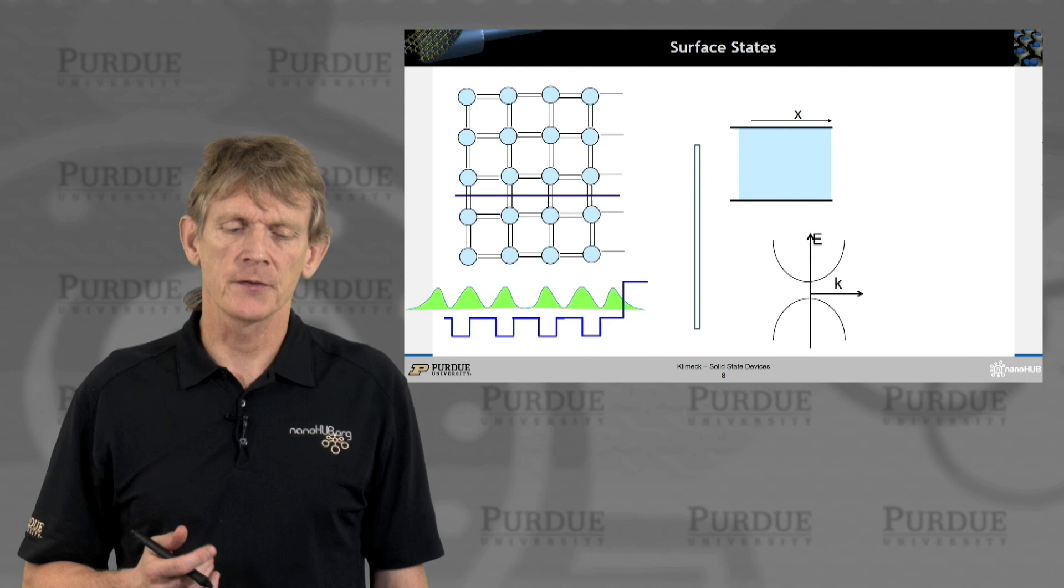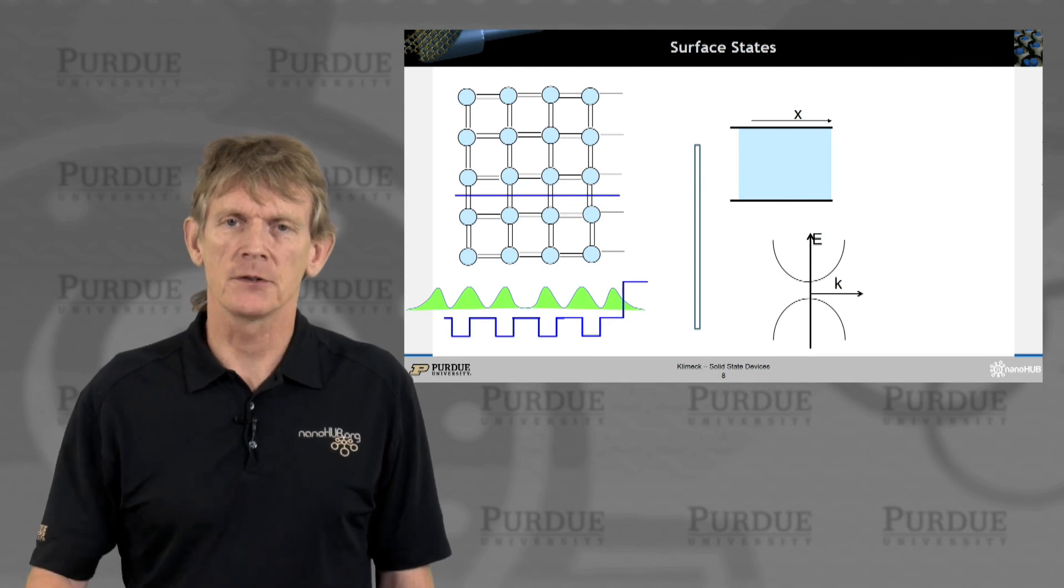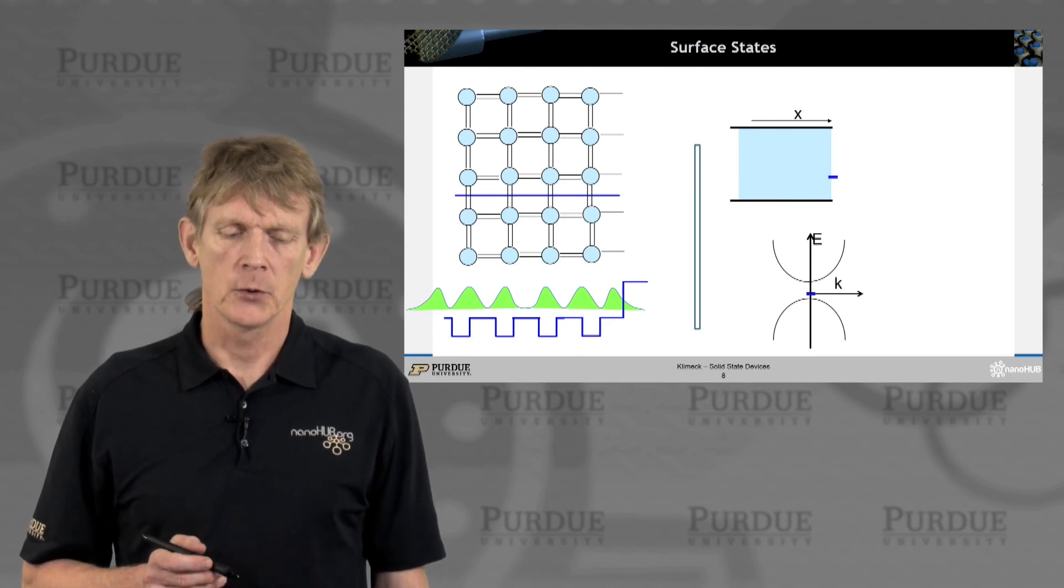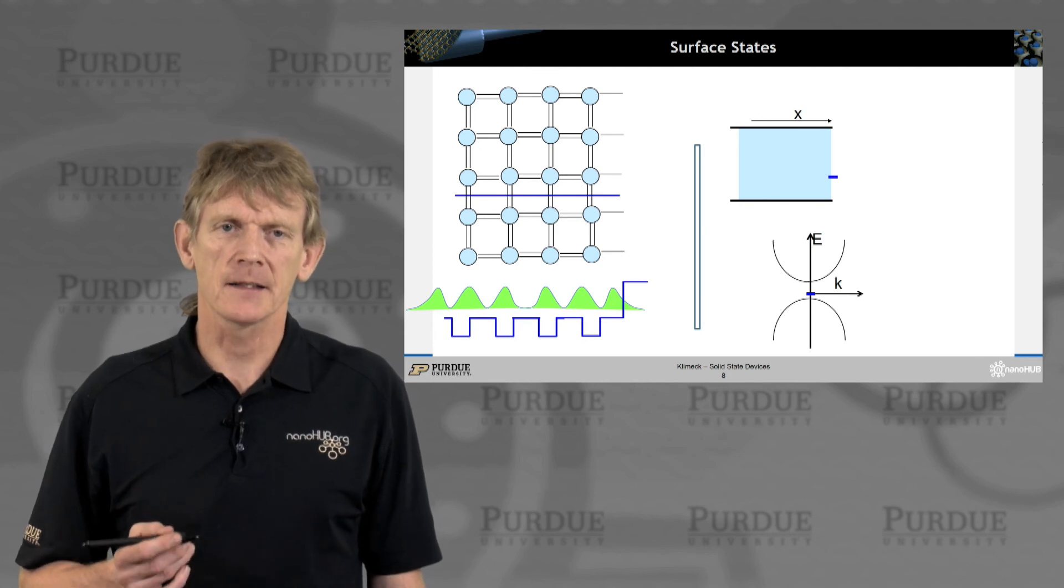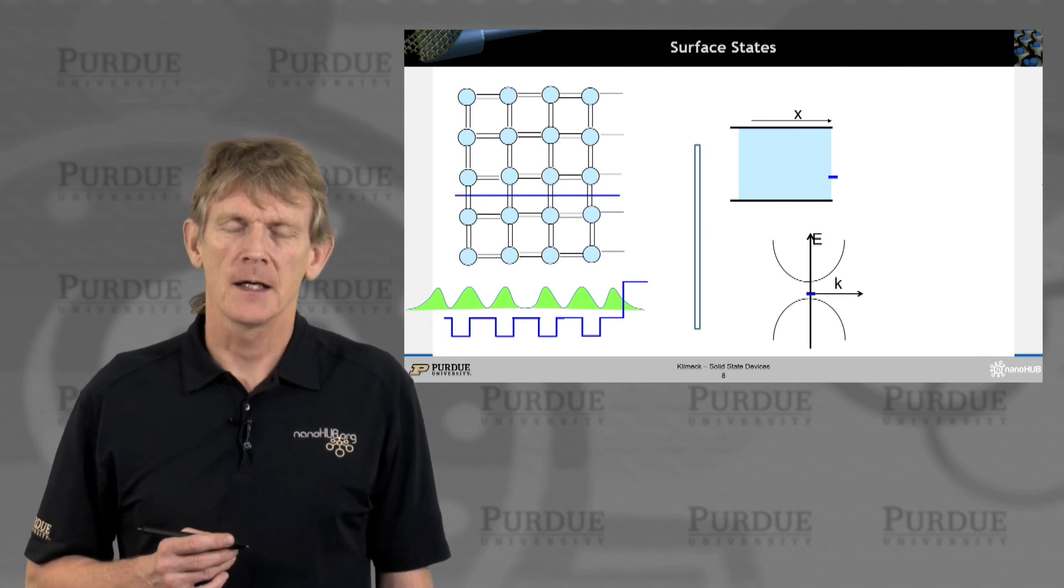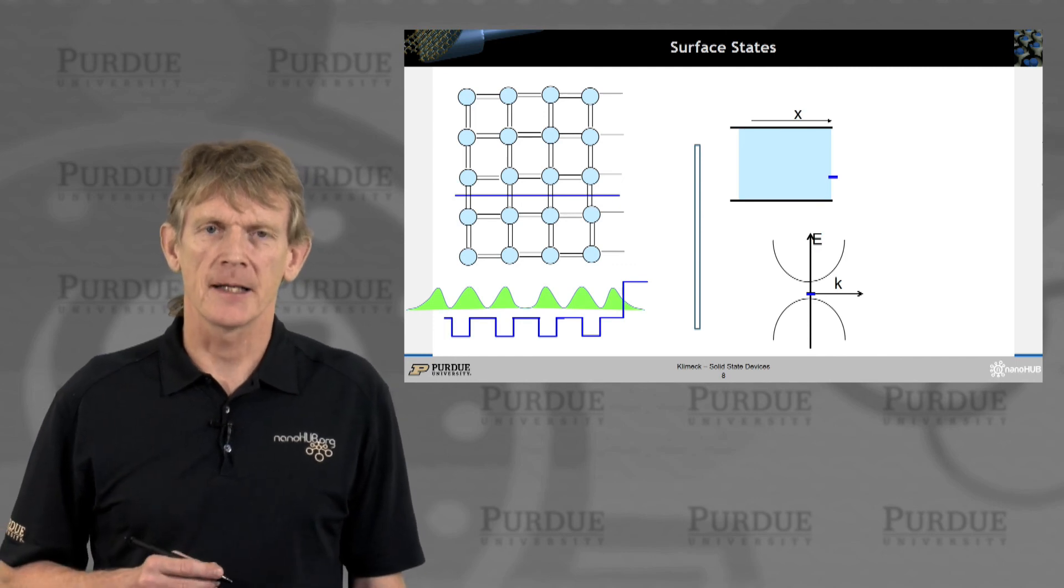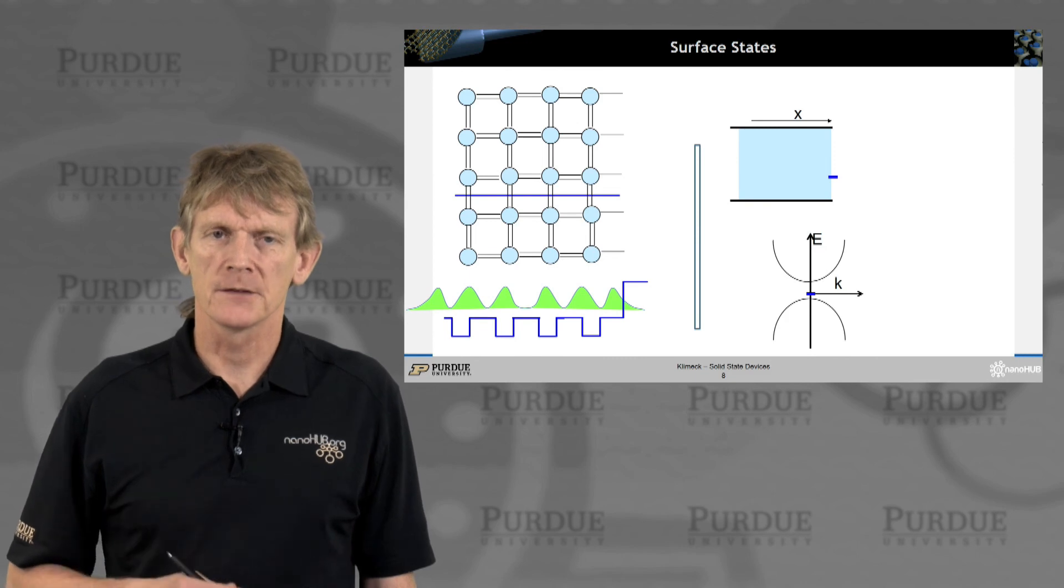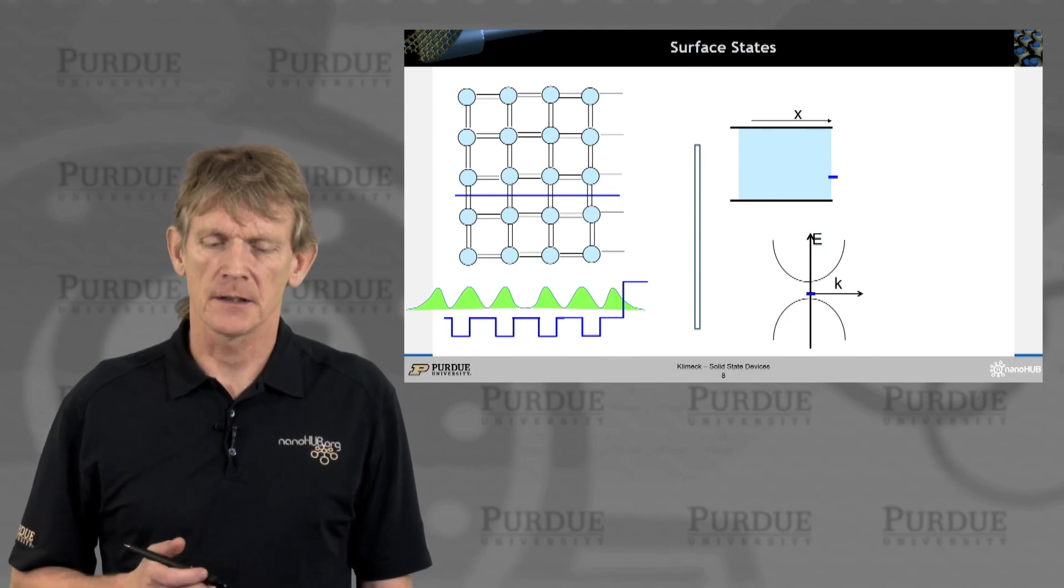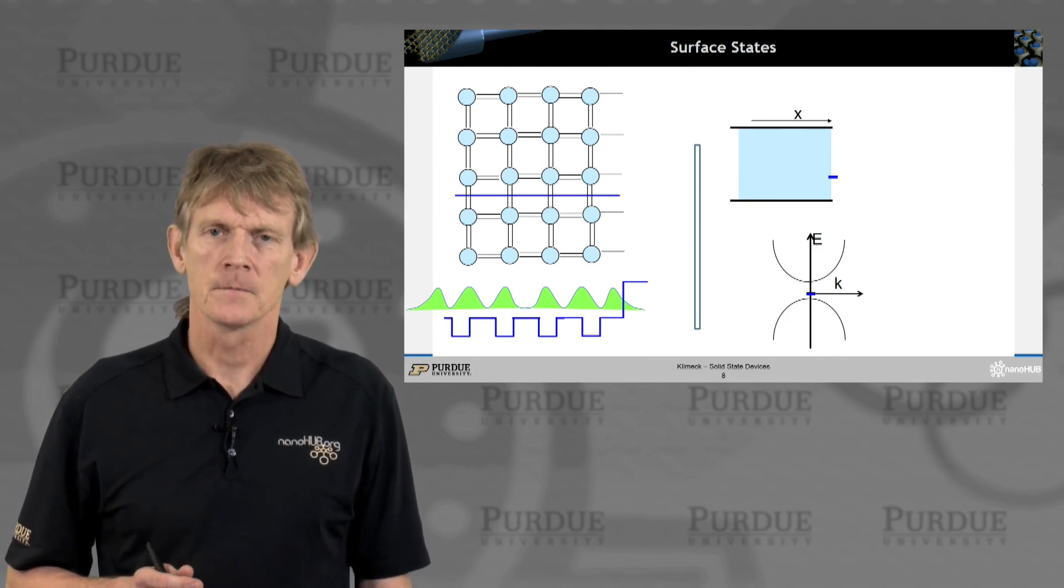If you have a surface like this with dangling bonds, what you do introduce are some bound states or dangling states at the edge. They typically form throughout the band gap. Pick any spot, there will be a surface state at the position here of the blue line.